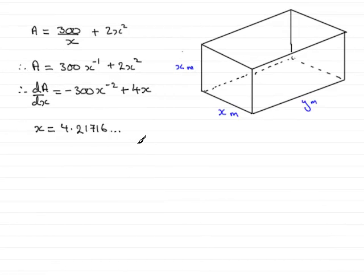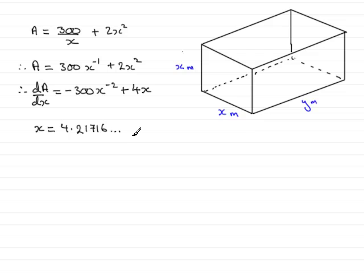In the next part of the question we found the value of x was 4.21716, which gave the area A a stationary value. What we are asked to do is show that with this value of x we create a minimum value for A — a minimum surface area. So how do we do that?